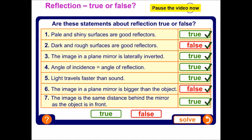Hopefully you managed to answer those 1 to 7 questions. Here are the answers. Pale and shiny surfaces are good reflectors, and dark and rough surfaces are not good reflectors. The image in a plane mirror is laterally inverted. The angle of incidence is always equal to the angle of reflection. Light travels far faster than sound — 300,000 kilometres per second. The image in a plane mirror is bigger than the object's — that is false. And the image is the same distance behind the mirror as the object is in front.